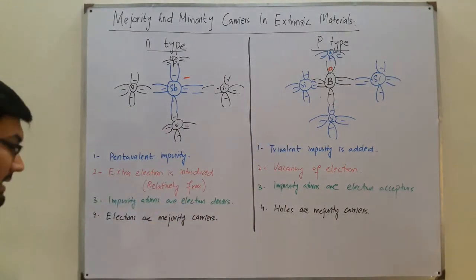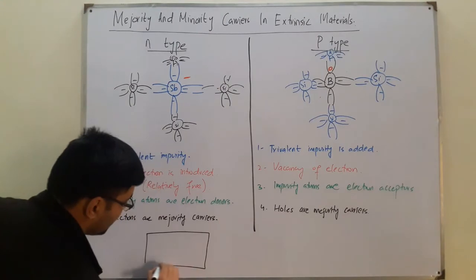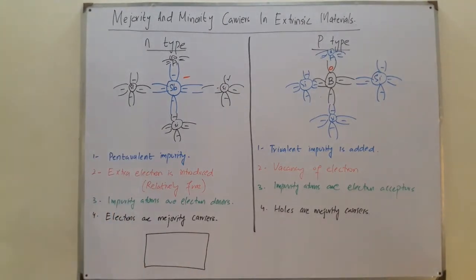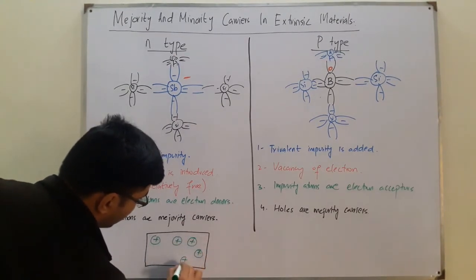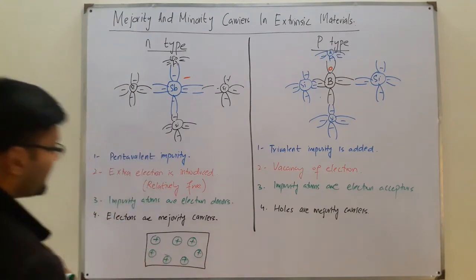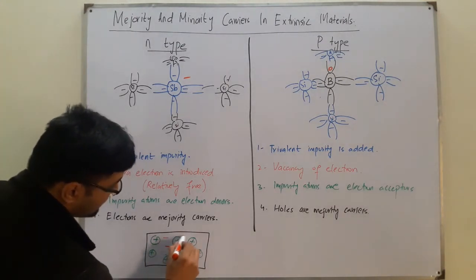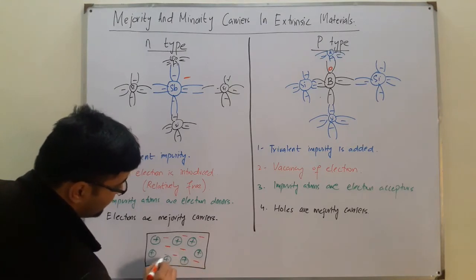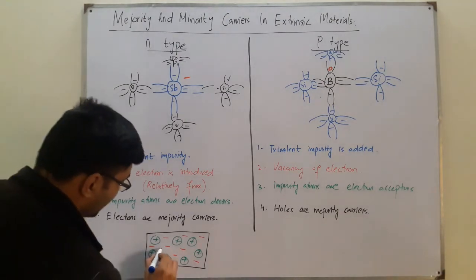If we draw the diagram for n-type material — as it is in the book — you have these donor ions, which are positively charged. You have electrons as the majority carriers, so there are a lot of them. The holes are the minority carriers, so there are just a few in number.